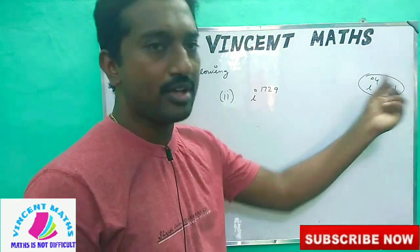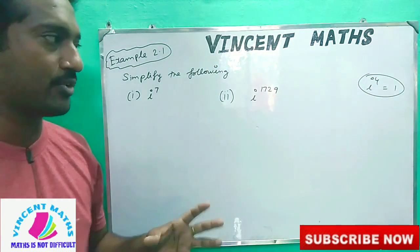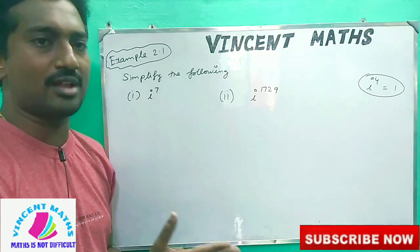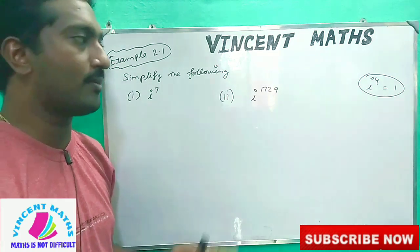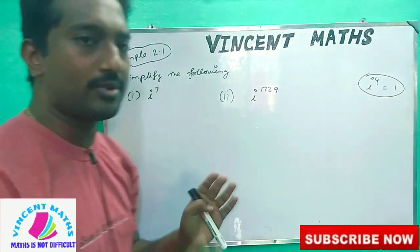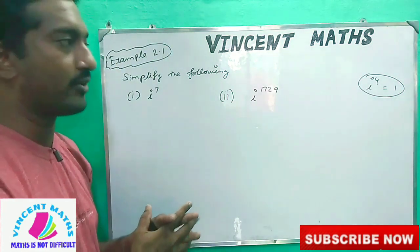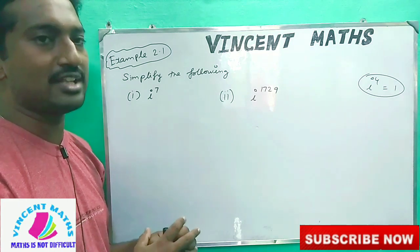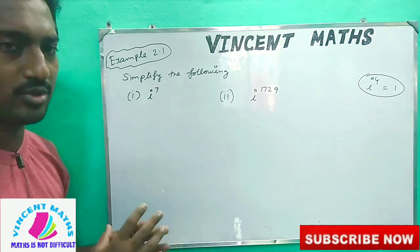So i power 4 equals 1. Then i power 4, which means i power 4 — that's 4. A multiple number of 4: divide and find what number remains. That's how we understand. That's why we are changing everything — we can convert i power 4. Now we are going to cover the first two solutions.